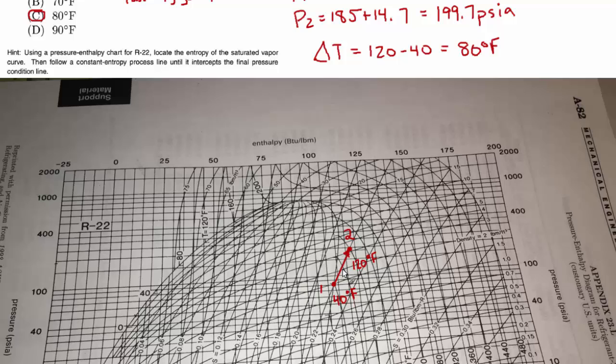I also think it's important to develop this intuition about the refrigeration cycle. So this is the compression process. Then it's going to go through the condenser and then the constant enthalpy process. And then it's ready to go through the evaporator and do the actual cooling that refrigeration processes are meant to do. So hopefully that helps. And I'll see you in the next video.